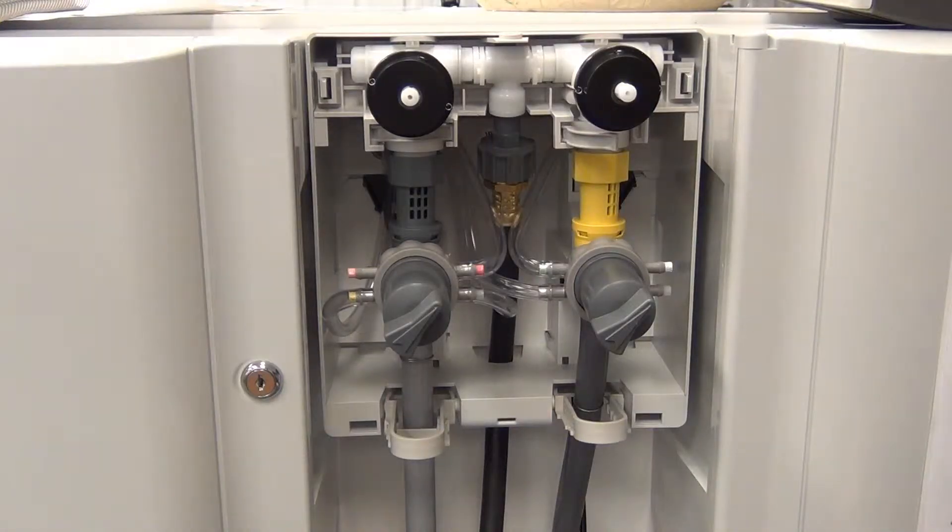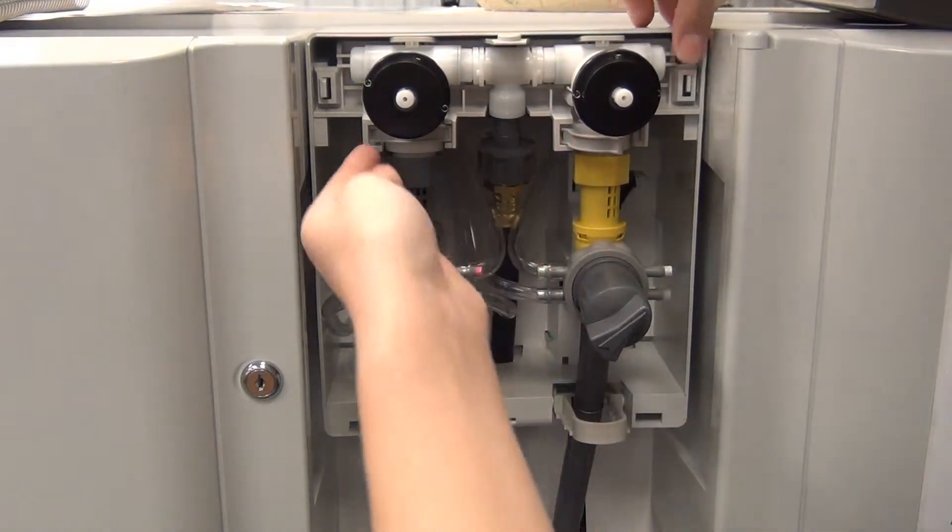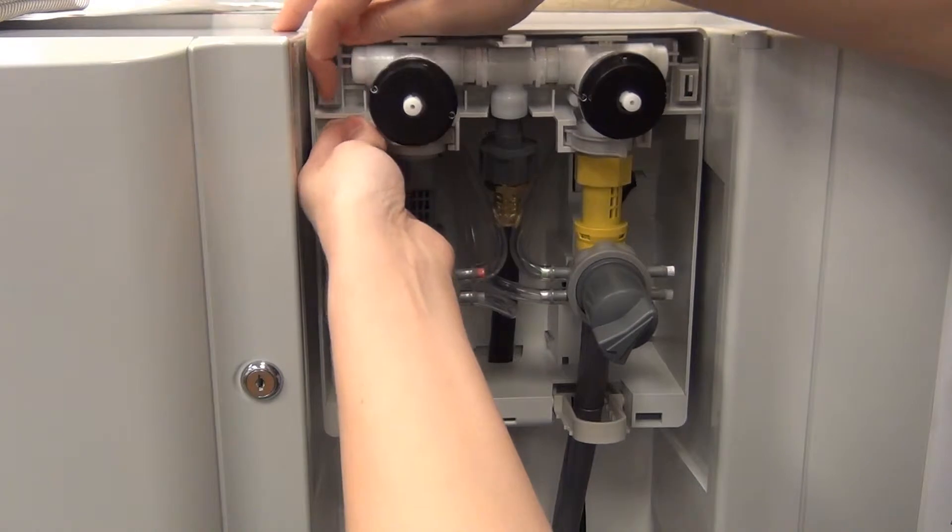After removing the cover, you need to release the valve bracket by pushing in the tabs on the left and the right. Then, pull the whole assembly up and forward.